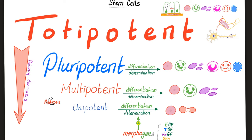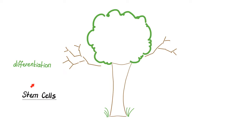Differentiation and determination are synonymous. To induce a stem cell to differentiate, you need morphogens. Examples of morphogens that induce differentiation include EGF (epidermal growth factor), TGF (transforming growth factor), and VEGF (vascular endothelial growth factor). They all end in GF because they stand for growth factor. We call them stem cells because, like the stem of a tree, they can branch out — hashtag differentiation.